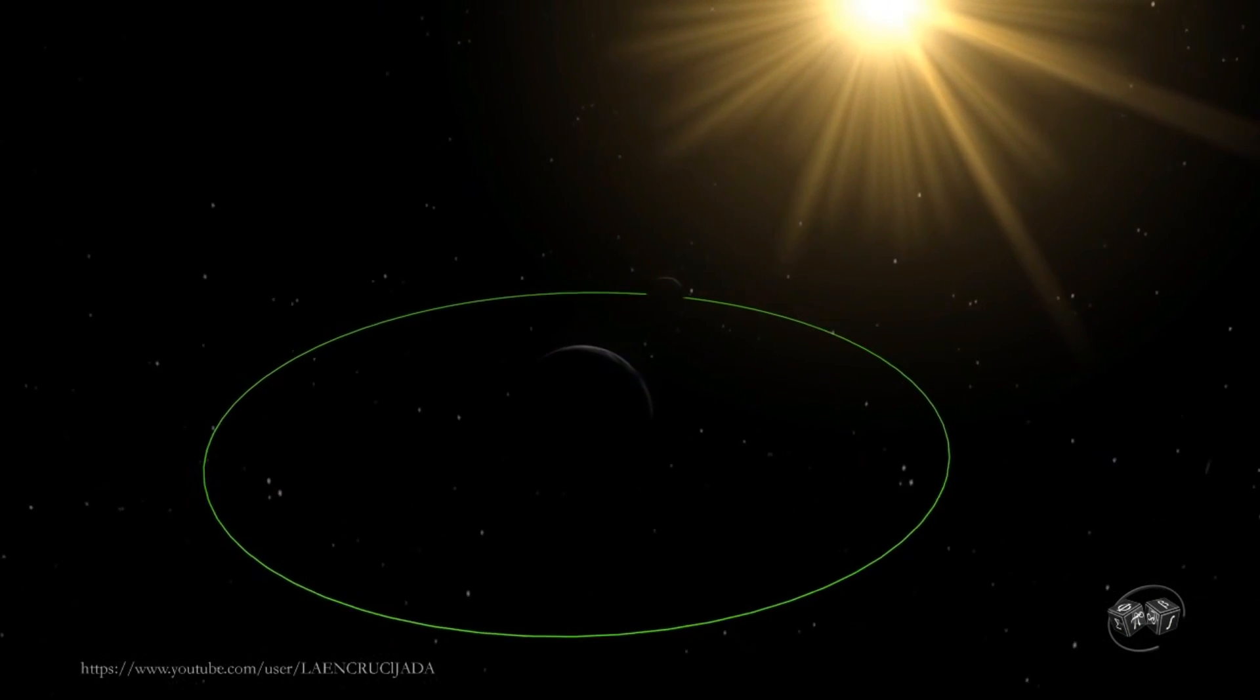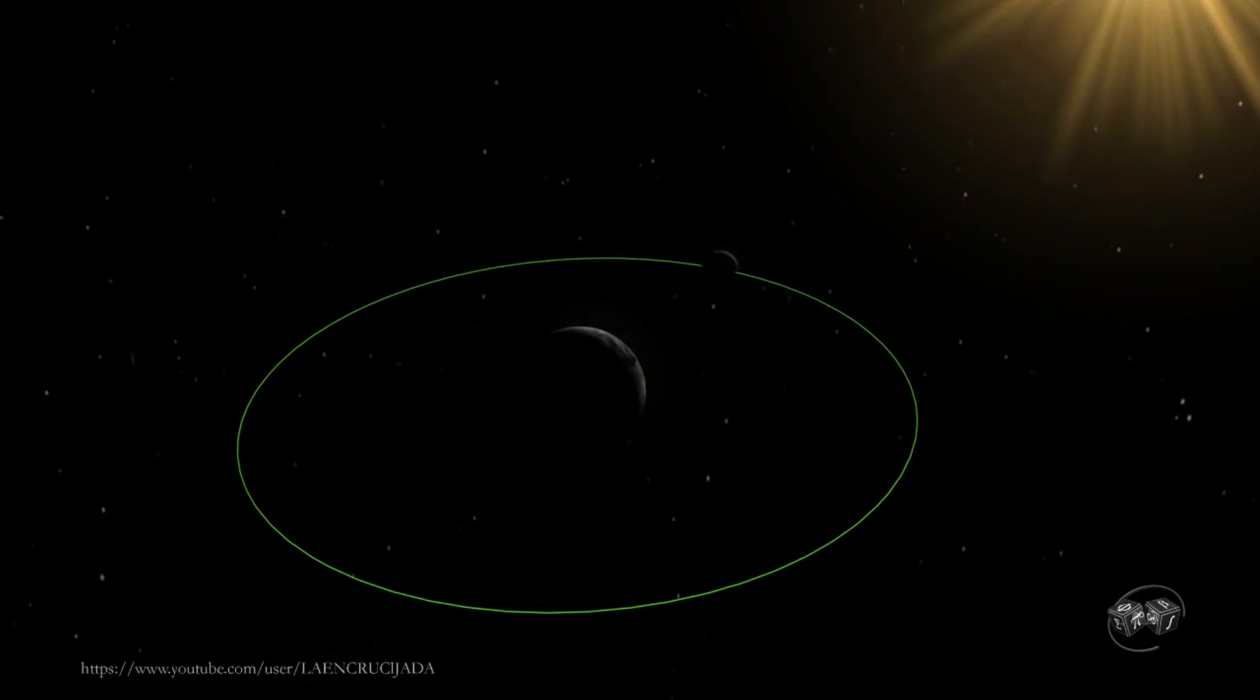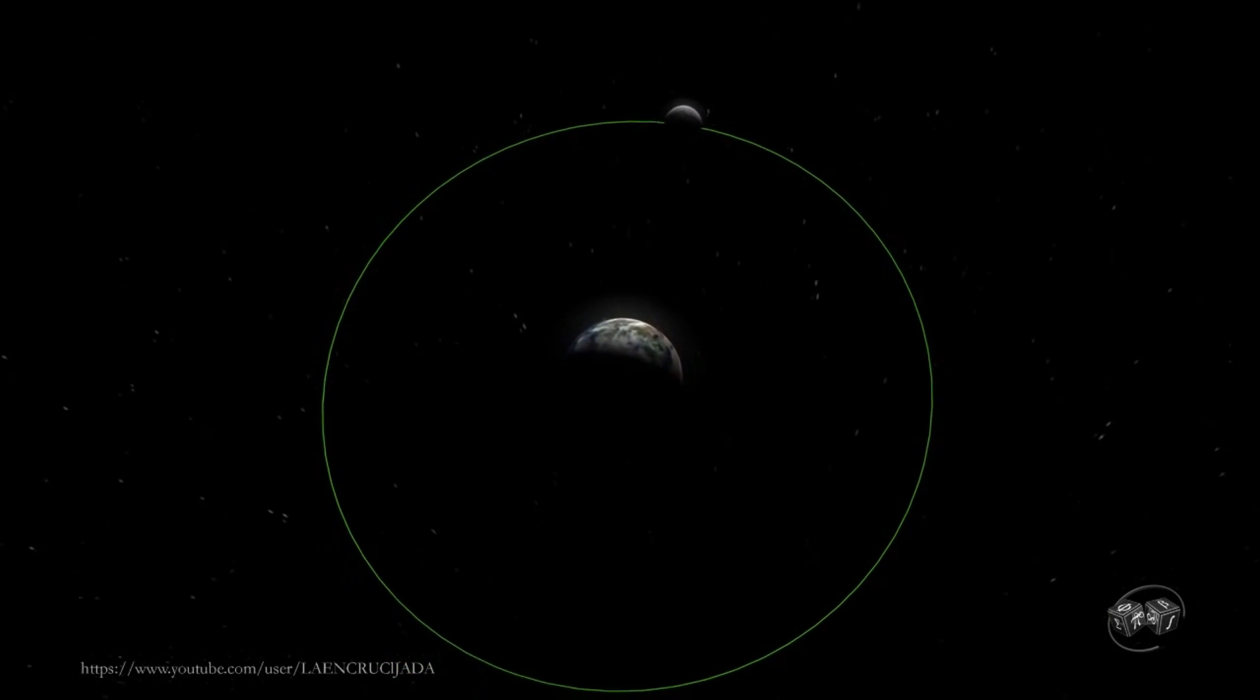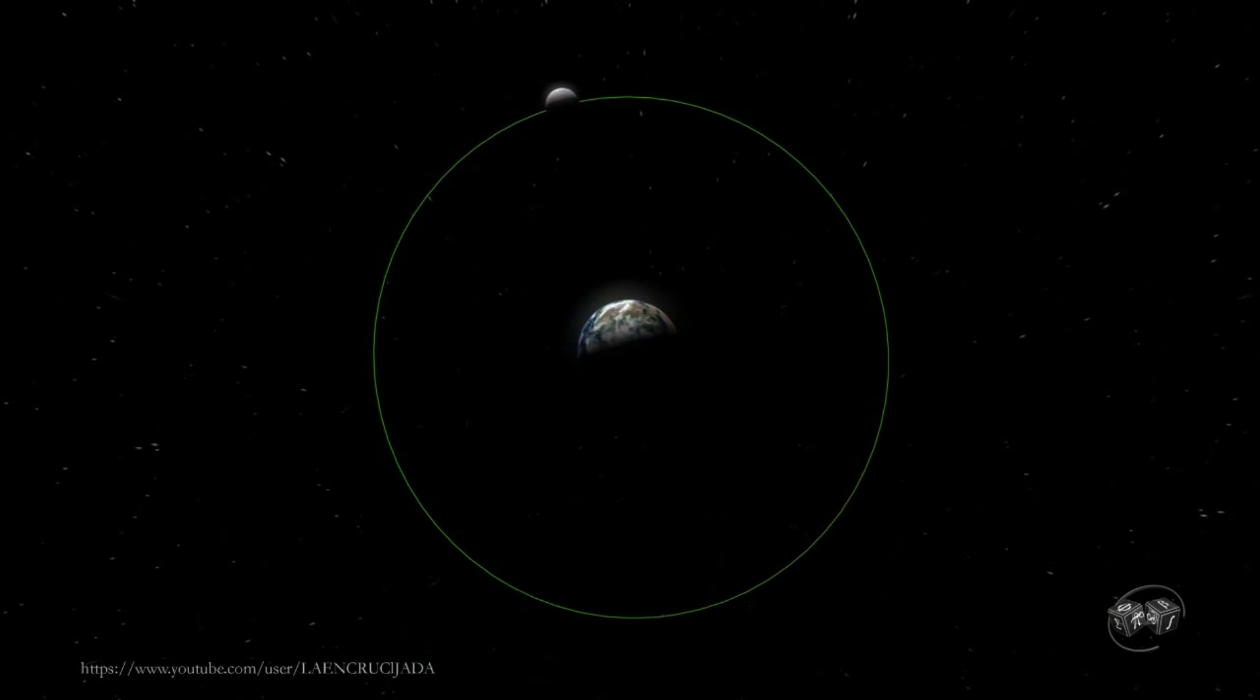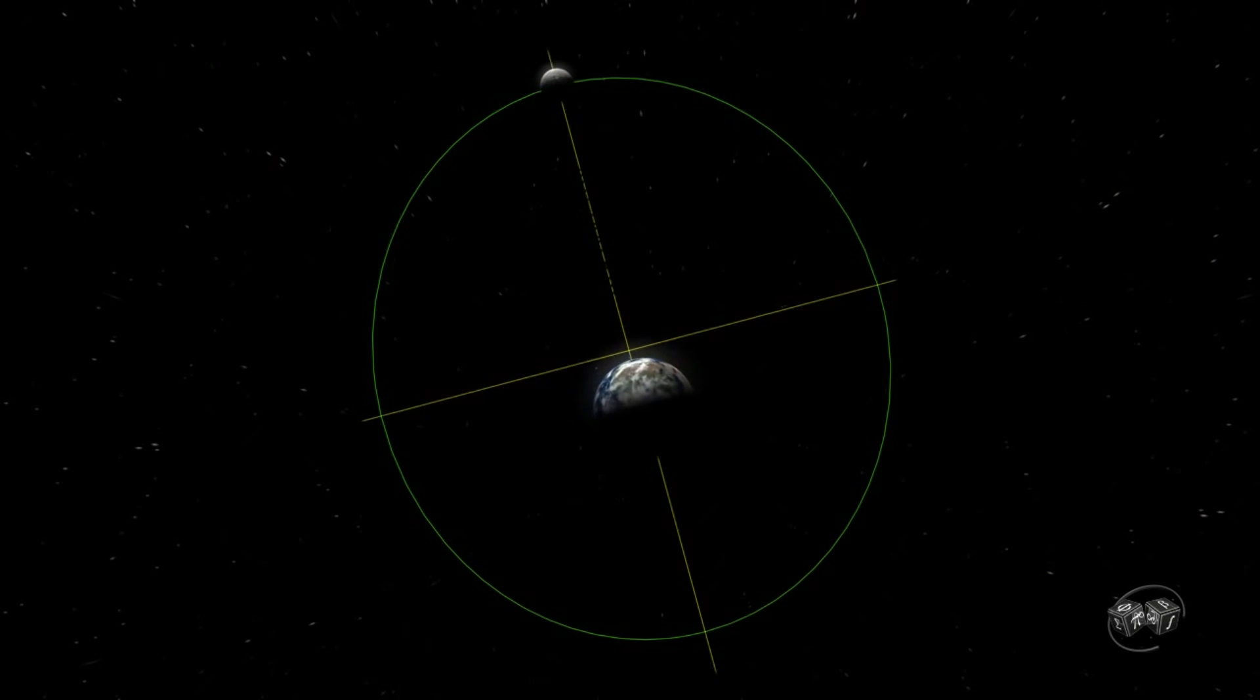For ease of explanation, we have considered so far circular lunar orbit. But the orbit of the Moon is distinctly elliptical with an average eccentricity, where the Earth is not located in the center.